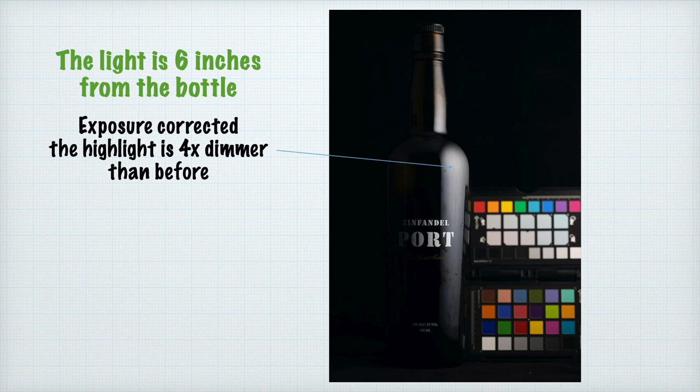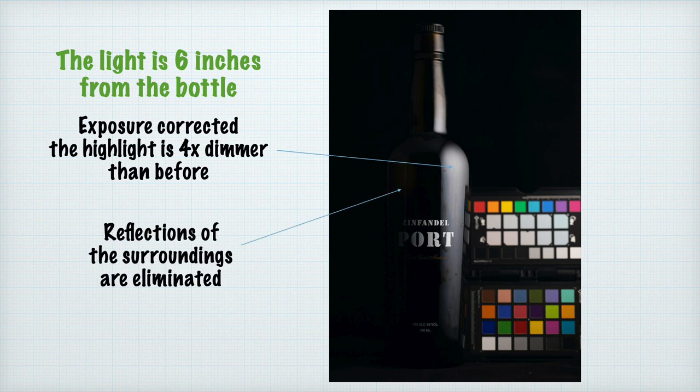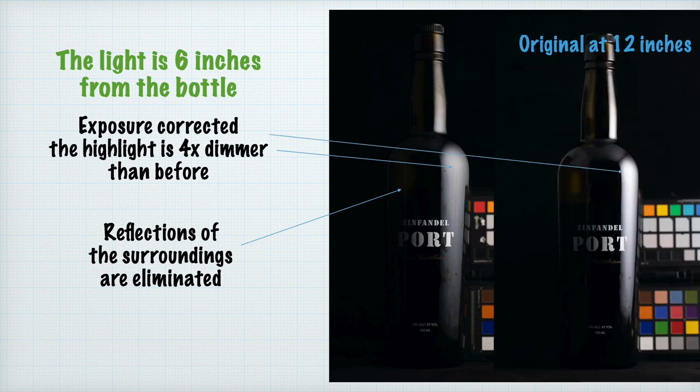If I had moved the light into one third the distance, about 4 inches away, the highlight would now be 9 times dimmer. The light being closer to the subject also makes it fall off in intensity faster, so the environment is not as lit up and the reflections of the surrounding area are greatly reduced too. Here they are side by side where you can see the highlight being wider and dimmer, making it less obtrusive.